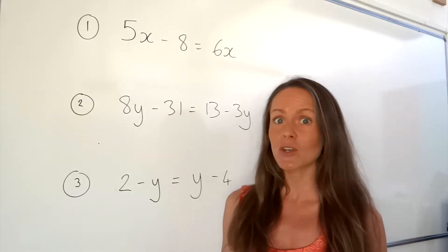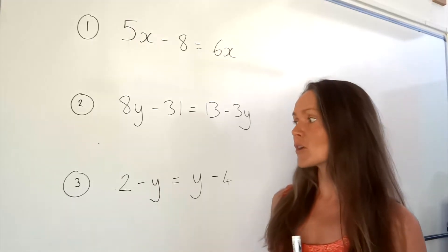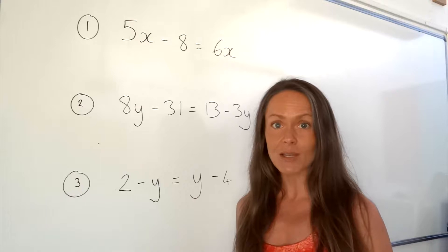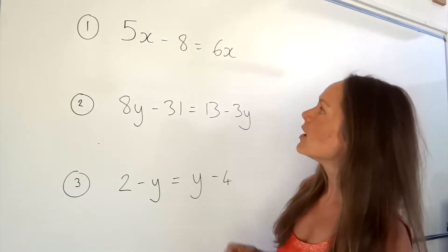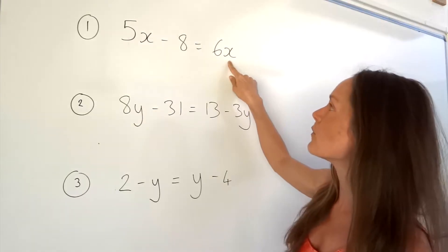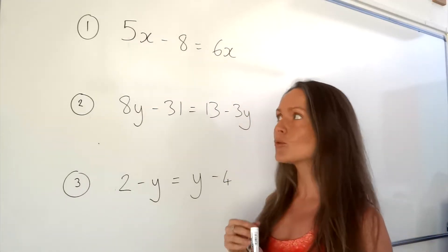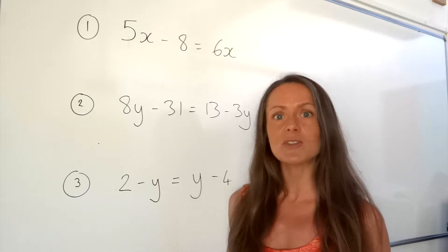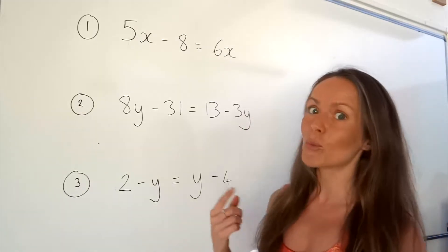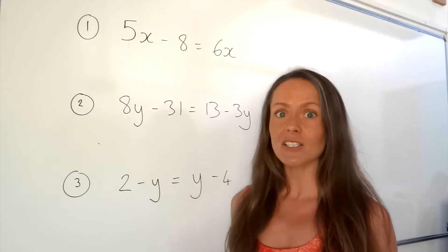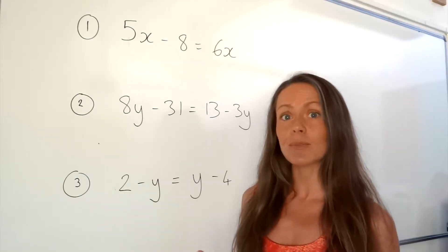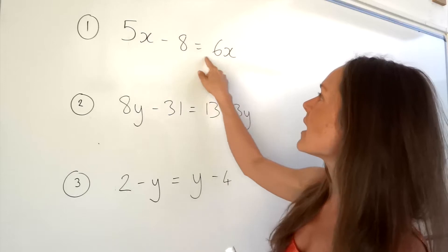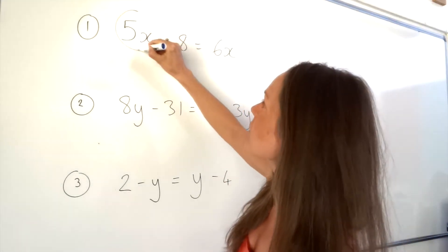In this one today I'm going to be showing you some harder equations, and I'm also going to be showing you ones that have the unknown, for example x or y, on both sides of the equal sign. So let's have a look at the first example. I've got x terms on the left and also the right. Our goal is to put all the letters, so the x's, on one side of the equals and everything that's not to do with x, so the numbers, on the other side. It doesn't matter which side we move them to, but I would advise you to always try and move the smaller term, because that way you'll keep the x's positive, which just makes your life a little bit easier. So in this one, the smaller x term is 5x.